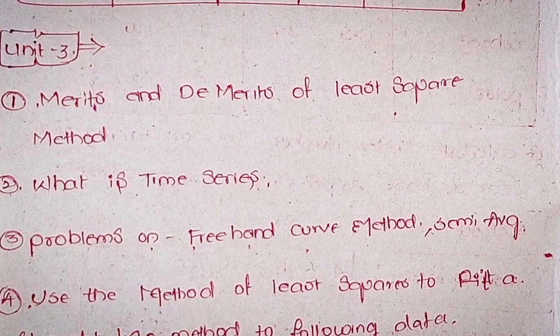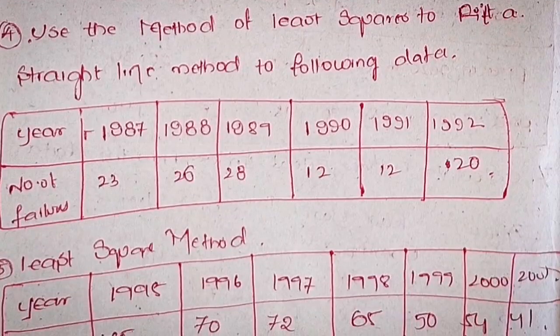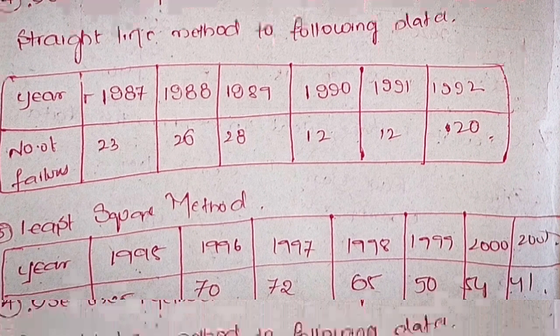Unit 3: Time Series. First, merits and demerits of the least square method. Second, what is a time series? Third, problems on freehand curve method and semi-average. Fourth, use the method of least squares to fit a straight line to the following data. Year: 1987, 1988, 1989, 1990, 1991, 1992. Number of failures: 23, 26, 28, 12, 12, 20.